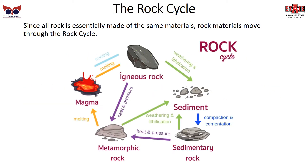Since all rock is essentially made of the same materials, rock materials move through the rock cycle. Starting with magma, it cools and becomes igneous rock. It becomes weathered and turns into sediment, which then layers and compacts into sedimentary rock, then goes through heat and pressure to become metamorphic rock, then melts and becomes magma again. All of these flow into each other, and rock is just cycling all throughout the Earth.